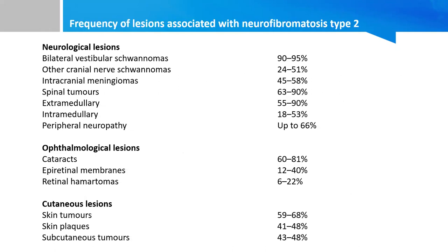This table shows the frequency of lesions commonly associated with NF2. In the neurological lesions category, bilateral vestibular schwannomas and other cranial schwannomas are common. Apart from this, spinal tumors — mostly extramedullary — are common lesions. In ophthalmological lesions, cataracts are found in roughly 60 to 80% of these patients. In cutaneous lesions, approximately half of these patients will have some sort of skin tumor present.